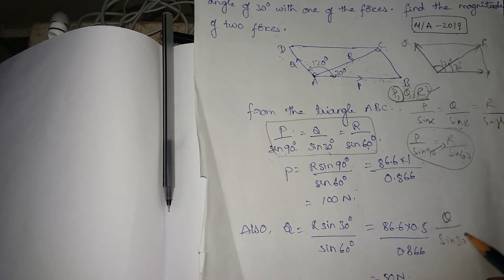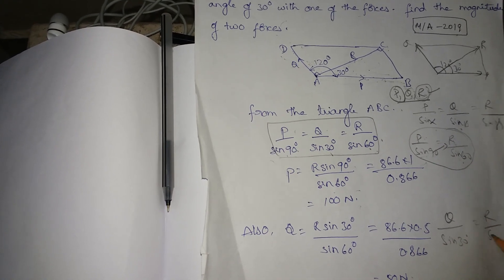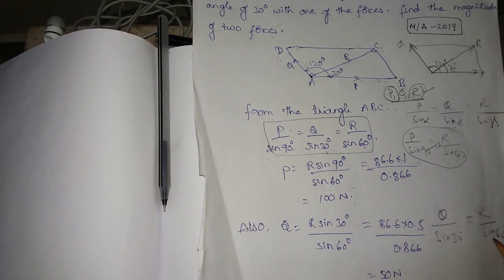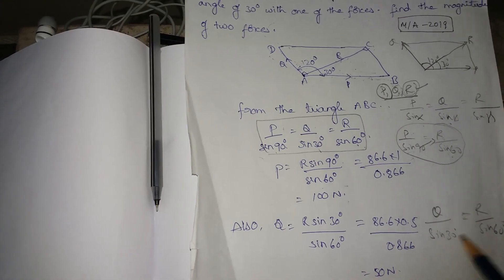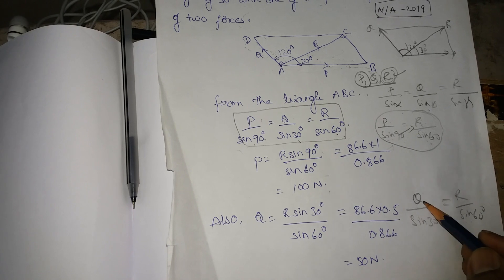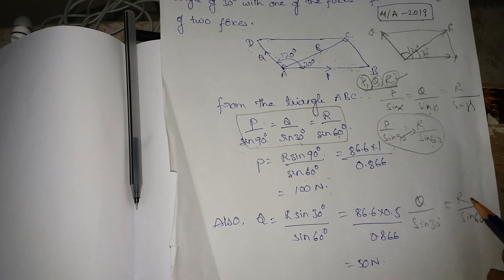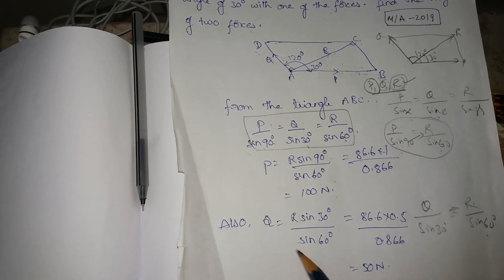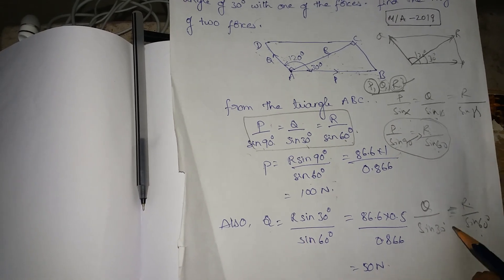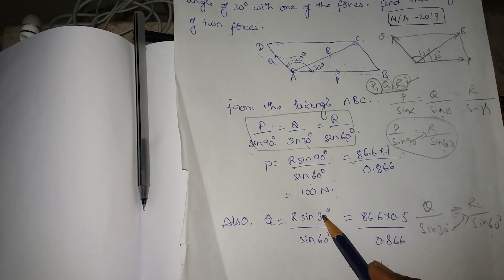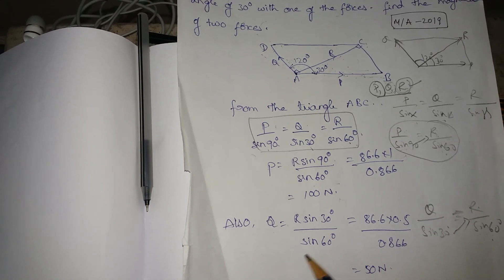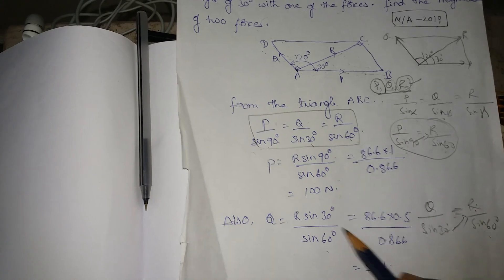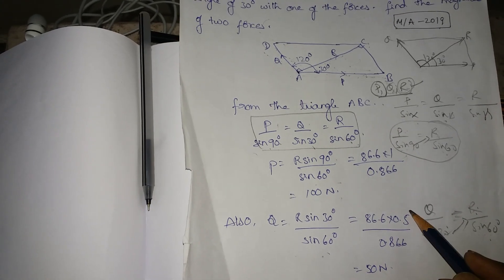R divided by sin 60 — we can find the values. Next, Q divided by sin 30 is equal to R divided by sin 60. So Q is equal to R sin 30 divided by sin 60.